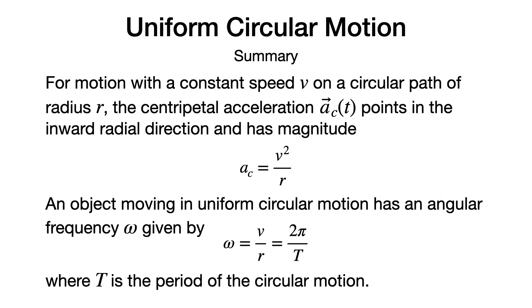In summary, for motion with a constant speed v on a circular path of radius r, the centripetal acceleration points in the inward radial direction and has magnitude v²/r. An object in uniform circular motion also has an angular frequency ω given by ω equals v/r, which equals 2π over the period T.